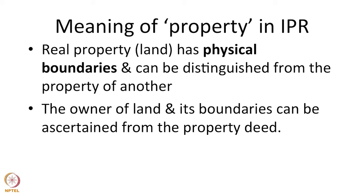Land can be measured, ascertained in numbers, computed. The title in a land also manifests itself in a document — what we call the deed or the sale deed by which land is conveyed from one person to another. In a sale deed, you would typically find towards the end a portion called the schedule, which has the description of the land, the extent of it, and also the boundaries. So you can be doubly sure — you could look physically and check the boundaries, or you could look at the title deed and look for the boundaries of the property.